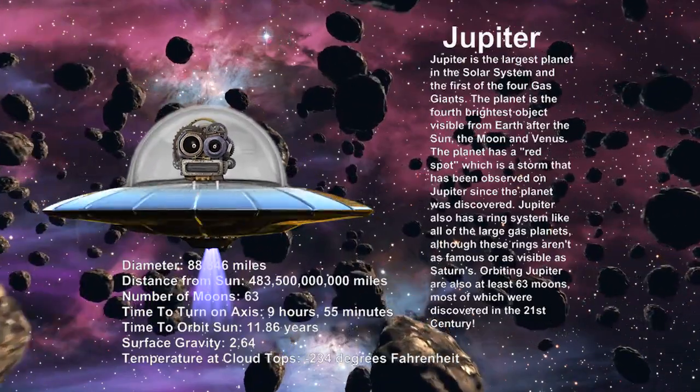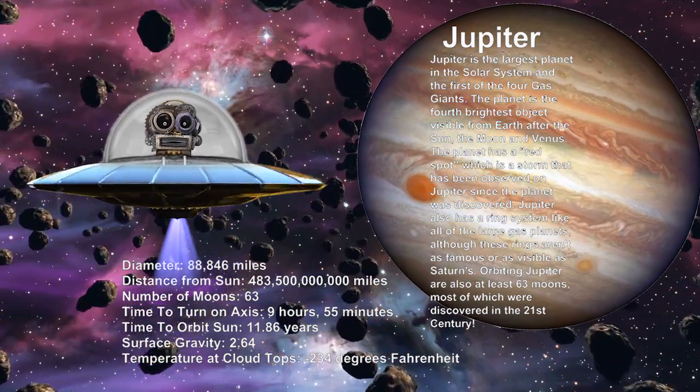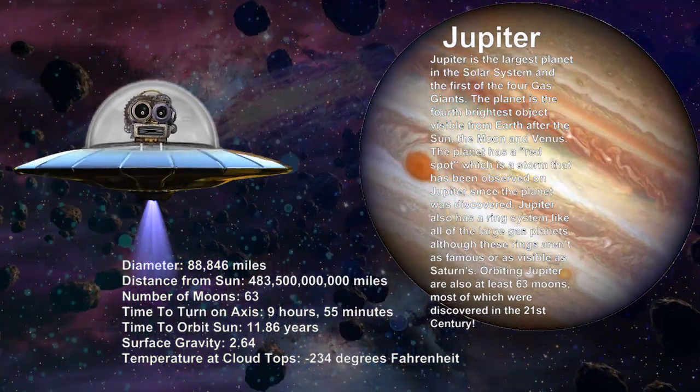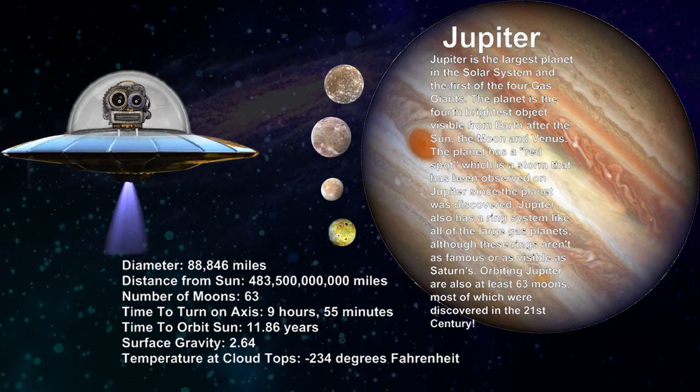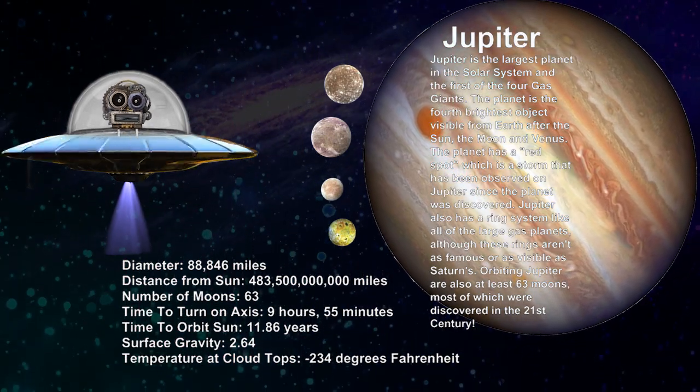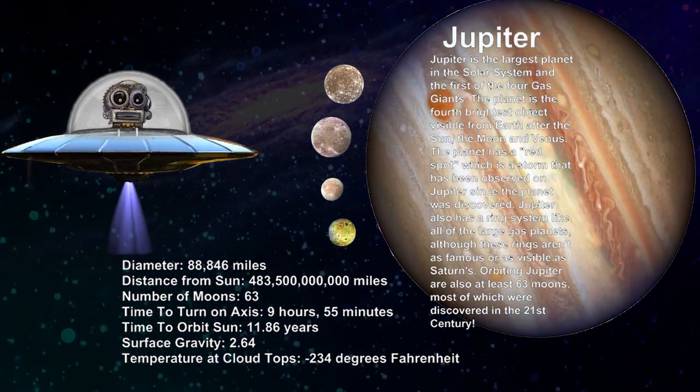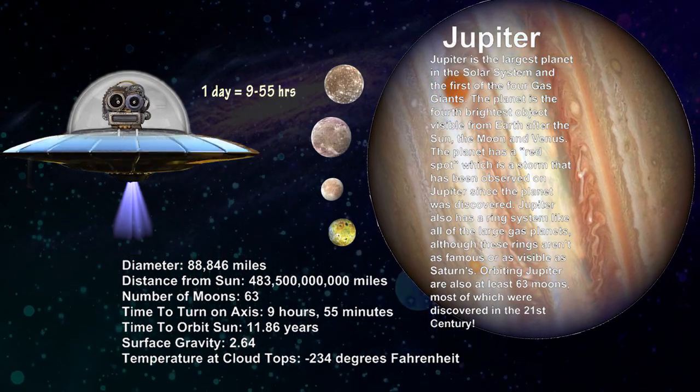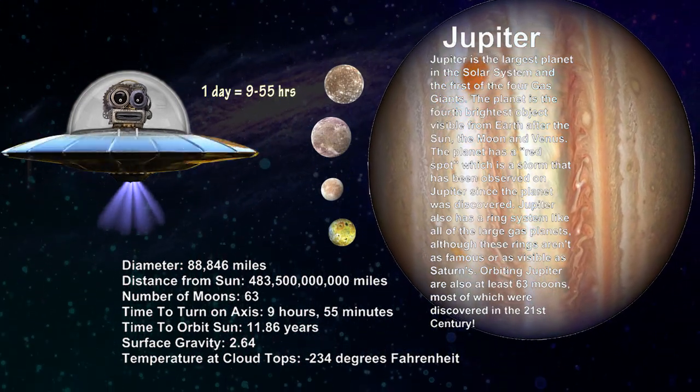Jupiter is the largest planet of our solar system. It also has four moons. One day in Jupiter is just about 9 hours 55 minutes, making it the shortest day of all planets.